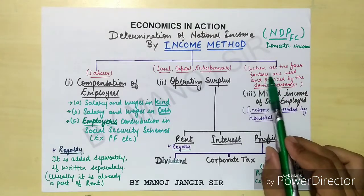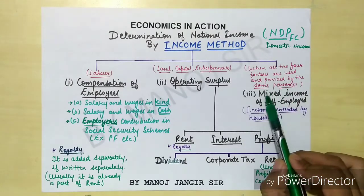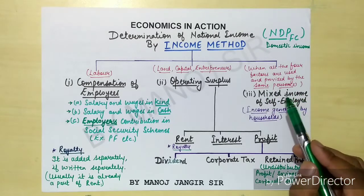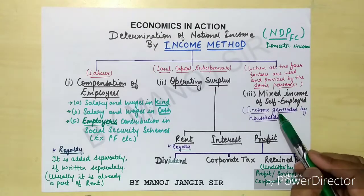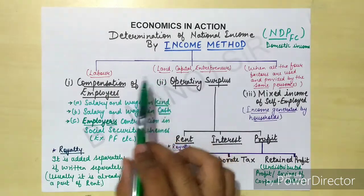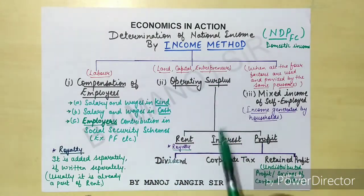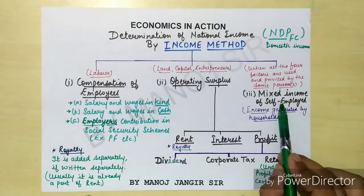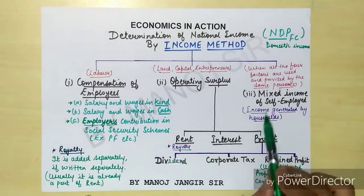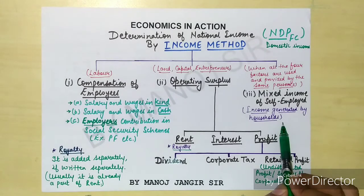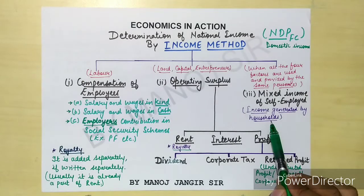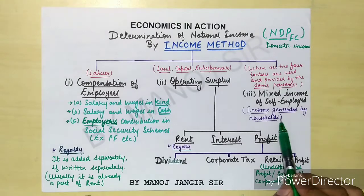When all four factors — land, labor, capital, and entrepreneur — are used and provided by the same person, for example your uncle who has opened a general store using his own land, labor, capital and managing it himself, the income generated is called mixed income of self-employed, also known as income generated by self-employed households.